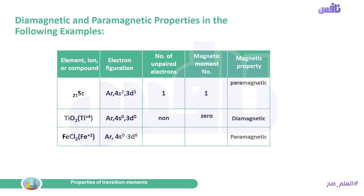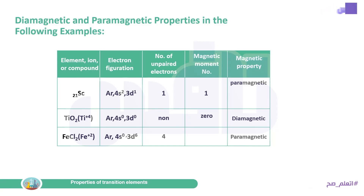Since titanium in TiO2 has no unpaired electrons, the magnetic moment equals zero and it is diamagnetic. For iron in iron chloride with oxidation state +2, the configuration loses 2 electrons from 4s, leaving 3d with six electrons. Examining those six electrons in the 3d orbitals, we find four unpaired electrons, so the magnetic moment equals four and iron(II) chloride is paramagnetic.